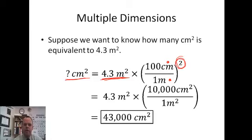We're going to square that. So it ends up being 4.3 meters squared is equal to 100 squared, which is 10,000 centimeters squared, per one. So instead of being 100 to one, it's now 10,000 to one. Multiply 4.3 by 10,000 and we get 43,000.